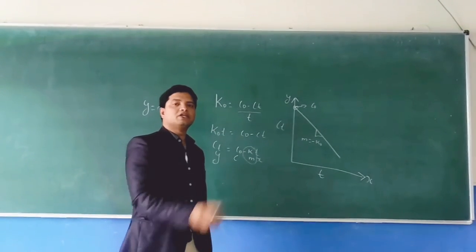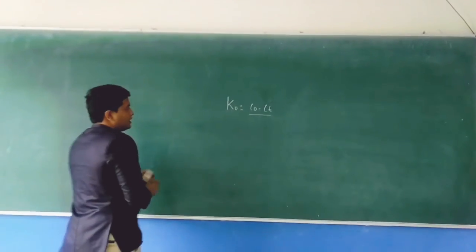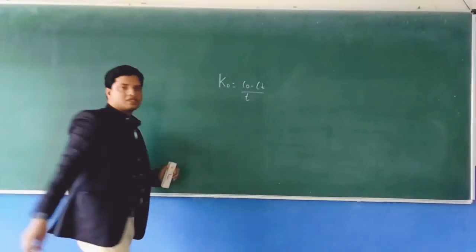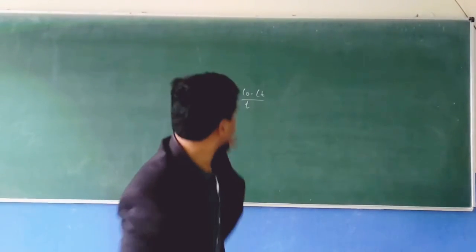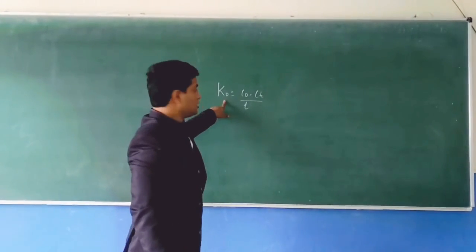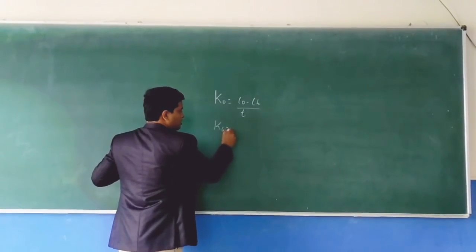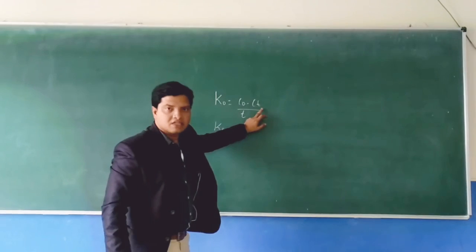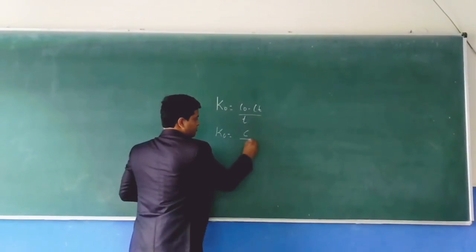Now let us determine the units. The equation is k naught equals C naught minus Ct divided by t. We need to find the units for the rate constant k. Concentration minus concentration gives concentration, let's say c, and you have time here.